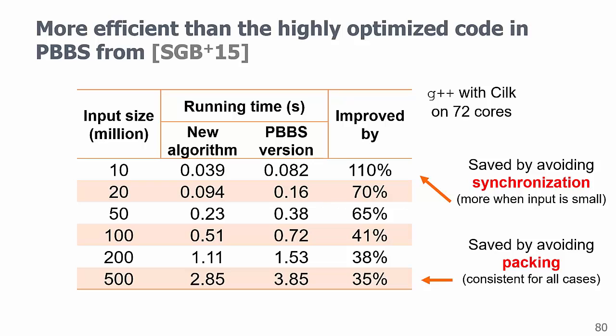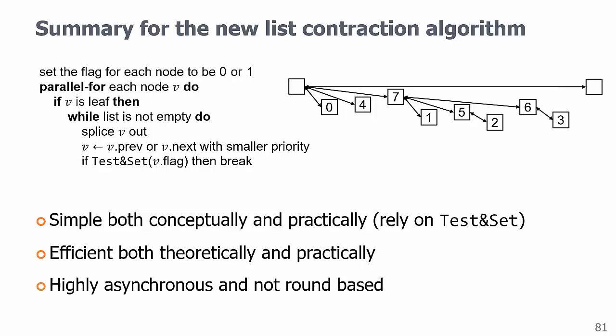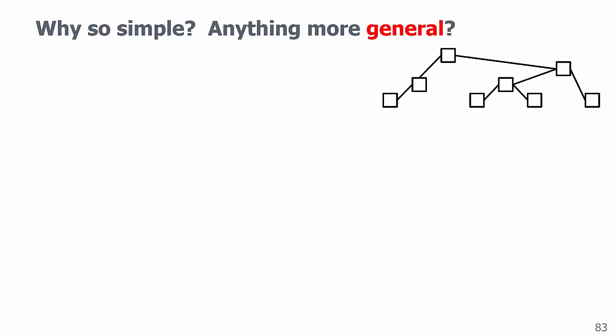As a conclusion here for list contraction, we propose an extremely simple parallel algorithm that is both conceptually and practically based on using test and set smartly. It's efficient both theoretically and practically. It's highly asynchronous. Actually, it does not use any synchronization. To me, this is a very interesting result since list ranking is like a headache in teaching a parallel algorithm course, and now we have a good candidate. But the more crucial question is, what can we learn from it and why is it so simple?